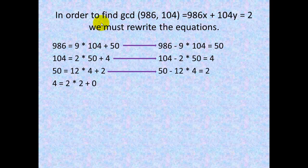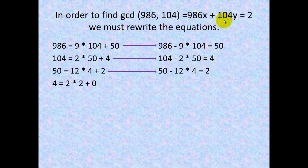In order to find our extended Euclidean algorithm, we have to rewrite our equations. This is the formula we're trying to get to: 986x plus 104y equals 2, our greatest common divisor.